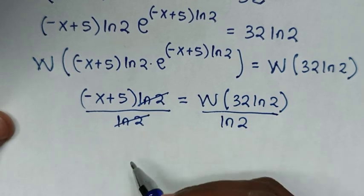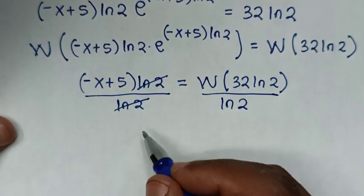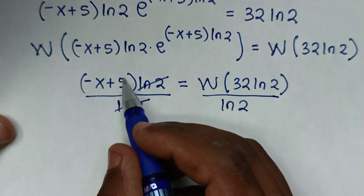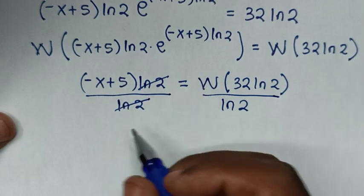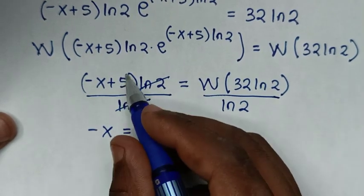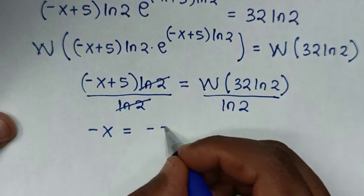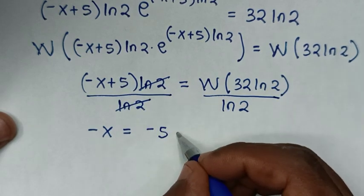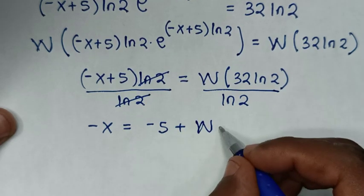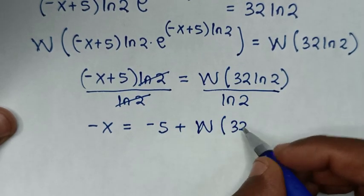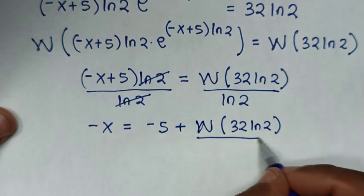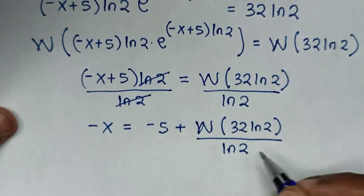We divide both sides by ln2, canceling ln2 on the left. Then we take the 5 to the other side, giving us negative x equals negative 5 plus W(32·ln2) over ln2.